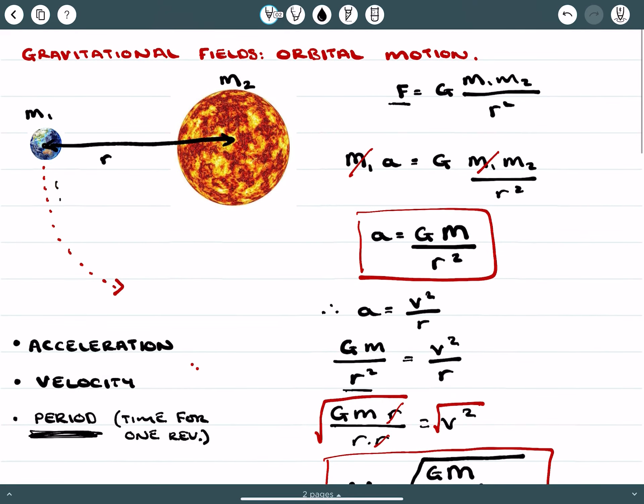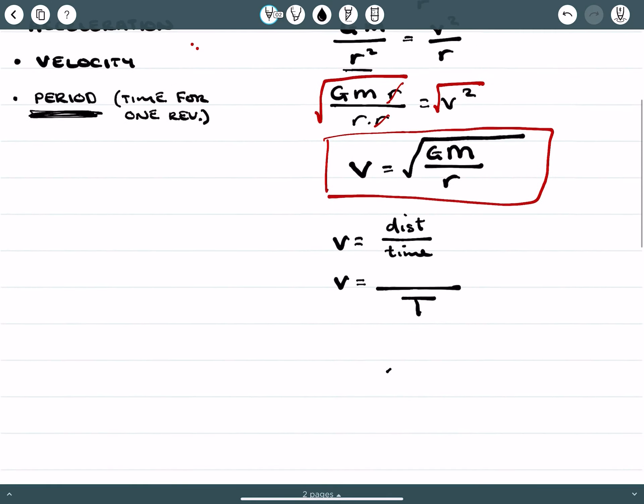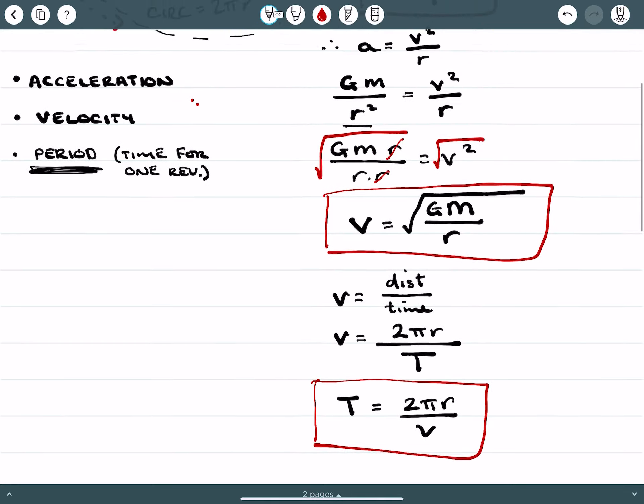And we can say that the distance is the circumference. So if I go back here, we're talking about the circumference of the circle and that's 2πr. So we're going to have 2πr as our circumference and then we just rearrange the equation to give 2πr over v. And this is our equation for our period which we can apply.